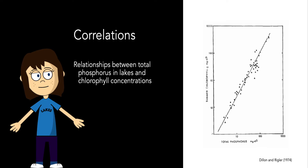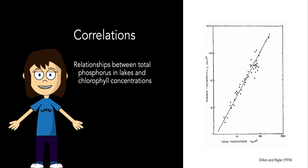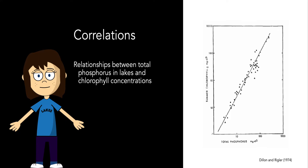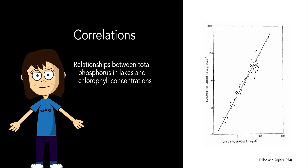Another method to assess nutrient limitation is through comparative studies. Here's an example of measurements of lake phosphorus versus summer chlorophyll concentrations, which is a proxy for algal biomass. The correlation is very strong — as total phosphorus increases, so too does summer chlorophyll. One might assume that phosphorus is driving chlorophyll concentrations, but as we know, correlation does not always mean causation. So we need to complement these studies with other experiments that more directly link phosphorus to phytoplankton growth.